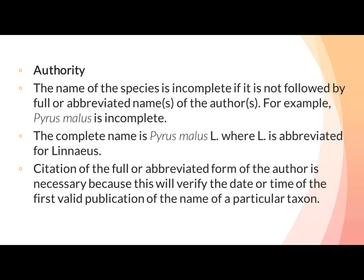جو citation ہے کسی بھی author کا — fully or abbreviated name — وہ ضروری ہے۔ جیسے ہمارے پاس Linnaeus ہے، اس سے ہمیں پتا چلتا ہے کہ کب اور کس وقت پہلی دفعہ یہ botanical name رکھا گیا ہے۔ تو author کی citation اس وجہ سے ضروری ہے کہ ہمیں پتا چلے کہ یہ plant کس وقت پہلی دفعہ report ہوا ہے اور ہمیں history کا بھی پتا چل جاتا ہے۔